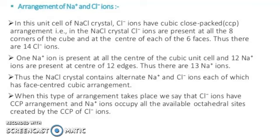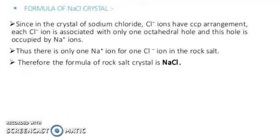When this type of arrangement takes place, we say that Cl⁻ ions have CCP arrangement and Na⁺ ions occupy all available octahedral sites created by the CCP of Cl⁻ ions. Since each Cl⁻ ion is associated with only one octahedral void, and this void is occupied by one Na⁺ ion, there is only one Na⁺ ion for one Cl⁻ ion in rock salt. Therefore, the formula of rock salt crystal is sodium chloride (NaCl).